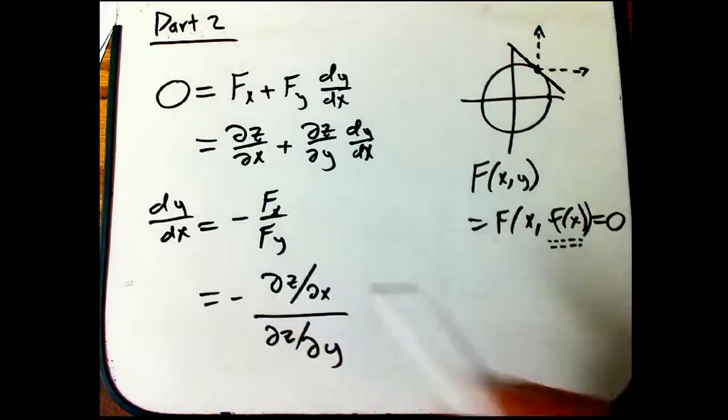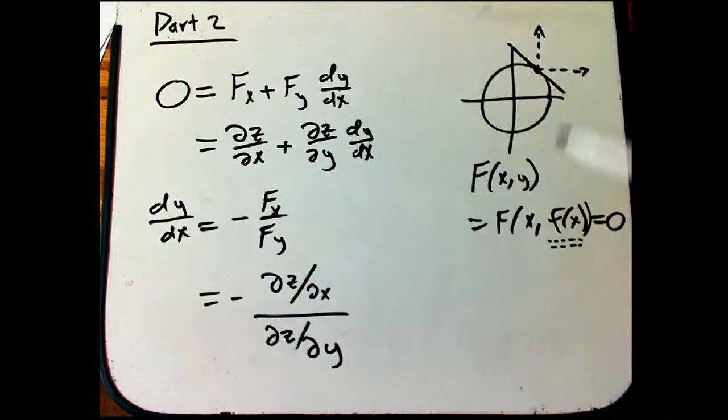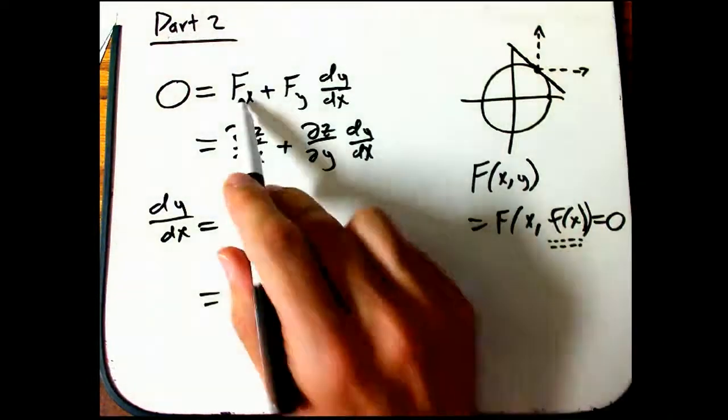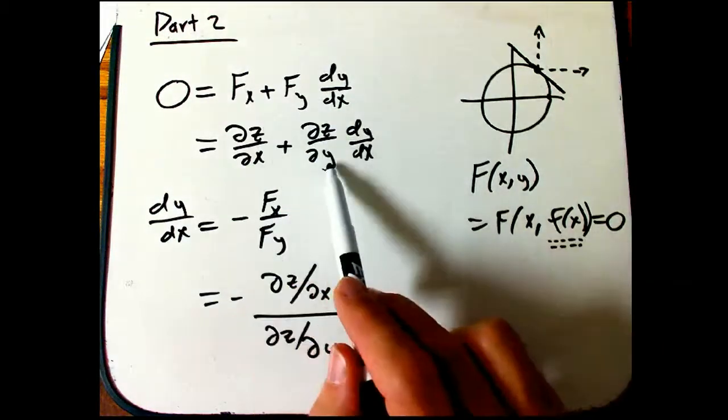So remember the perspective here, what we're doing is switching between two perspectives. The big Fx and the big Fy perspective, or the dz dx, dz dy perspective, the partials...